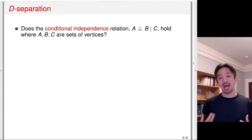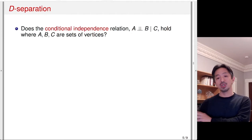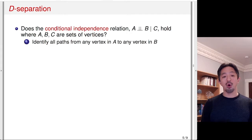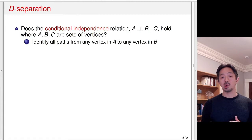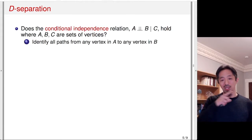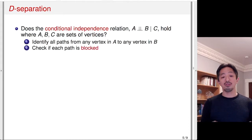Take a previous DAG and you can ask the question: does these two variables independent of these other two variables conditioning on this third set of variables? The first step is to identify all paths, both causal and non-causal, from any vertex in A to any vertex in B. So if you're trying to check the conditional relationship between A and B given C, you identify all paths from any vertex in A to any vertex in B, and write down all paths.